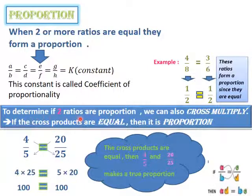To determine if two ratios are proportion, we can also cross multiply. Pay attention here, we cannot use this method except if we have two ratios. If they are more than two ratios, we cannot use it. If the cross products are equal, then it is proportion.